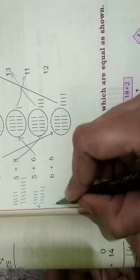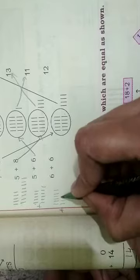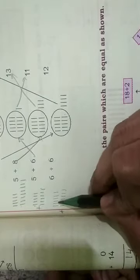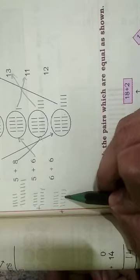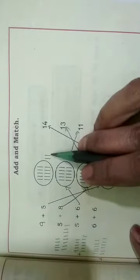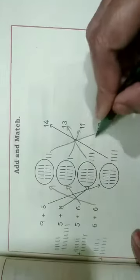Then here they give 6 plus 6. 6 plus 6 — count 1 through 6, then 1 through 6 again. Count all together: 1 through 12. Here the answer is 12, which means 1 group of 10s and 2 units. That's why we match here and here.